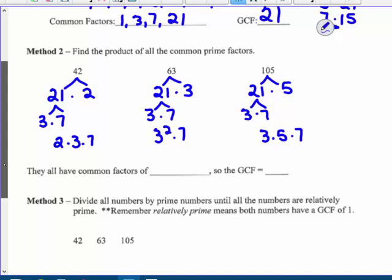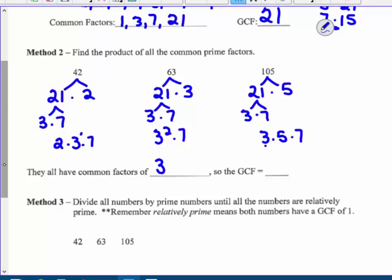So they all have, nope, they don't all have a 2, but they all have a 3 in common because this is 3 to the 1st over here. And that's 3 to the 1st here, but this is 3 to the 2nd, so I can't use 3 to the 2nd. And they each have a 7, so their GCF is 21.